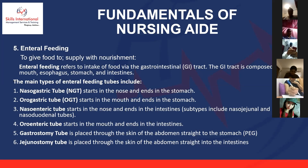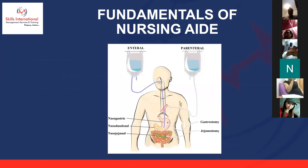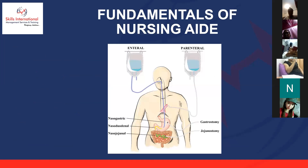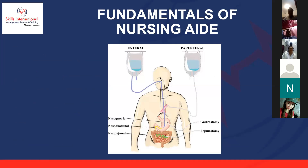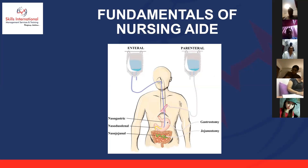We have learned there are six types of enteral feeding, all feeding by tubes via the gastrointestinal tract. The feeding goes through a bottle or plastic container, passing from the nose through the nasogastric tube directly to the stomach, or via gastrostomy directly to the stomach as the PEG tube. We also have nasoduodenal, nasojejunal, and jejunostomy tubes — all feeding by tubes.